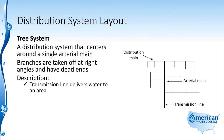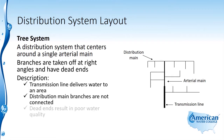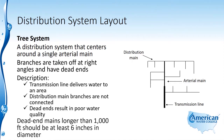The transmission line delivers water into an area, the distribution main branches are not interconnected, and this results in dead ends, which ultimately results in poor water quality. Dead end mains that are longer than a thousand feet should be at least six inches in diameter.